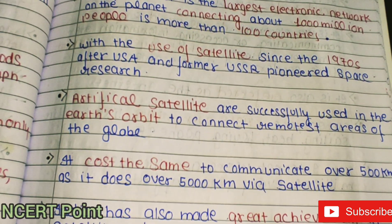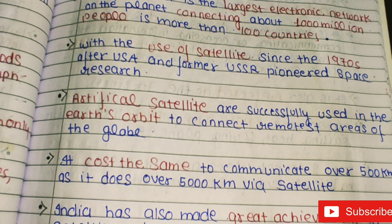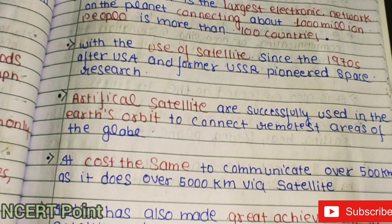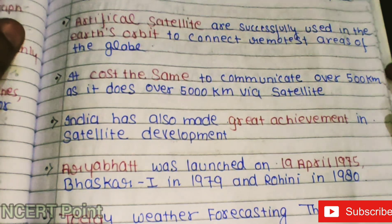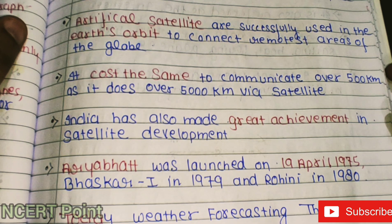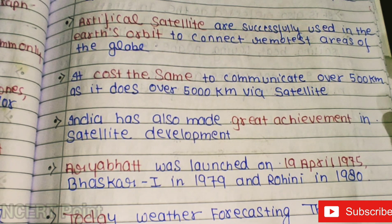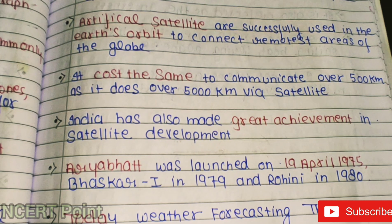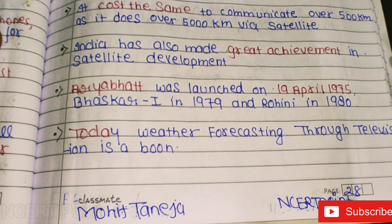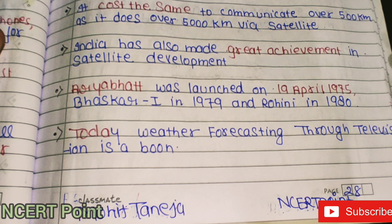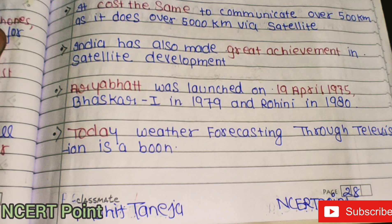With the use of satellites since the 1970s — after the USA and former USSR pioneered space research — artificial satellites are successfully used in Earth's orbit to connect remote areas of the globe. The cost of communication is the same whether transmitting over 500 km or 5,000 km. India has also made great achievements in satellite development: Aryabhata was first launched on 19 April 1975, Bhaskara I in 1979, and Rohini in the 1980s. Today, weather forecasting through television is a great boon enabled by satellite technology.